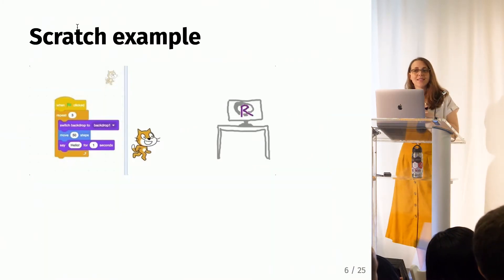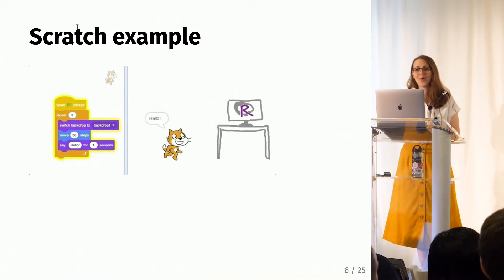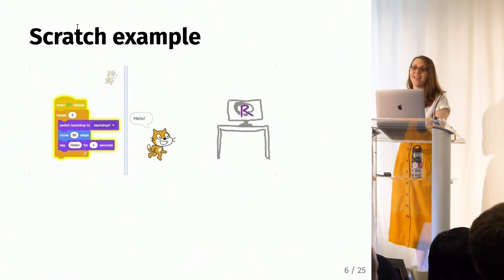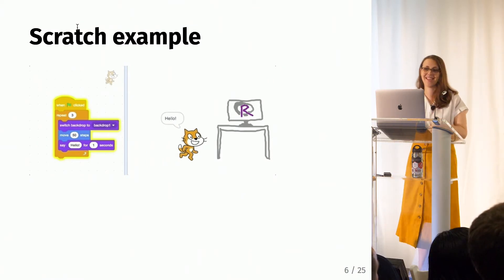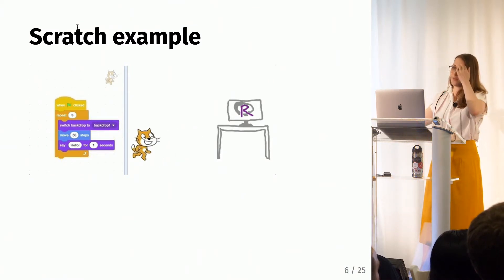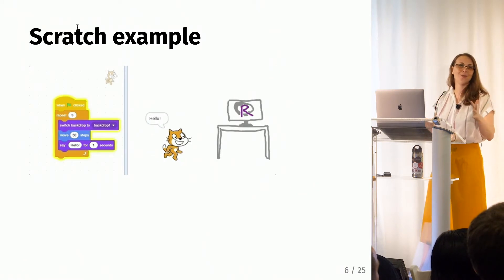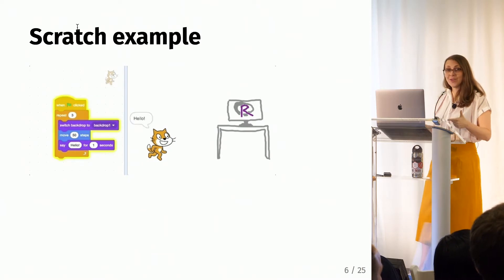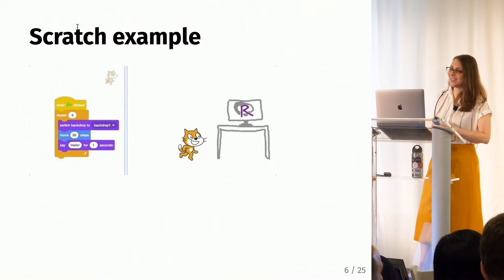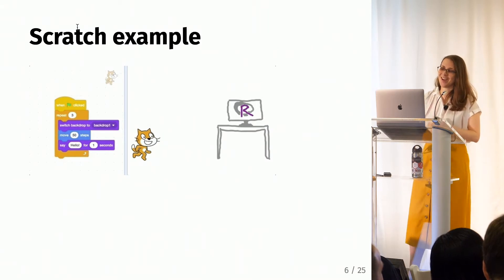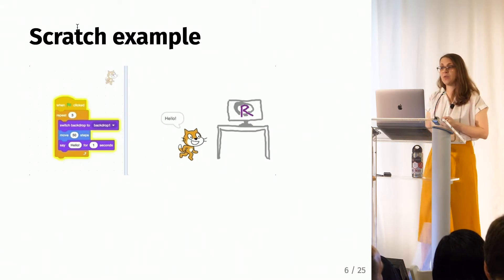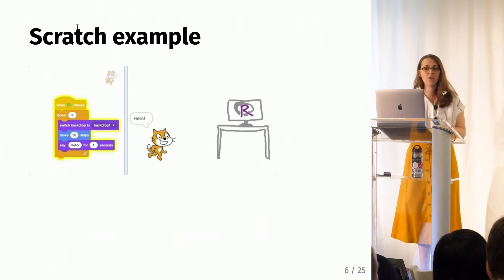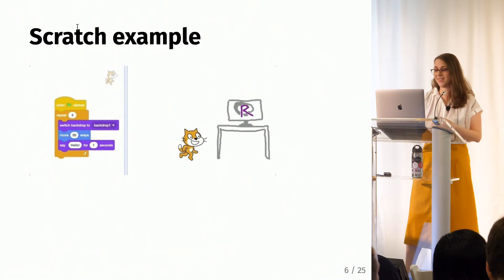Here's a small example I made in Scratch: within a repeat block, I change the background, have the cat move 50 steps, and then have it say hello for one second. This is a GIF, which is why it's repeating on a loop. Though this is just scratching the surface of what you can do, as I said, you can't make graphs — so we forked the repo and made our own blocks in order to make graphs and work with data.